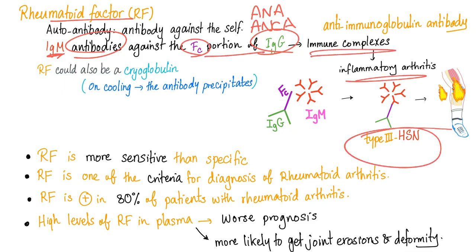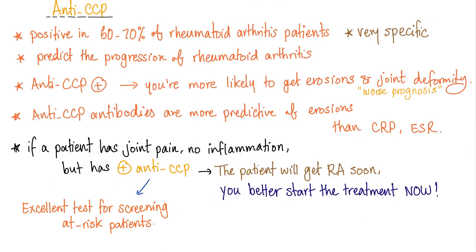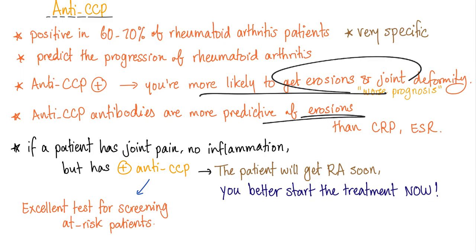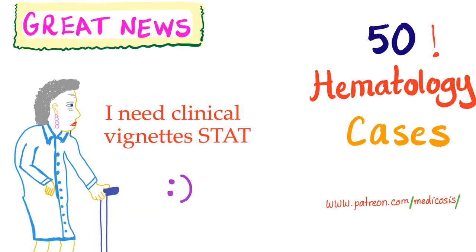These immune complexes deposit — this is type 3 hypersensitivity — and inflammation is on. Rheumatoid factor is more sensitive than specific. Anti-CCP antibodies do correlate with the severity of symptoms and are very specific for rheumatoid arthritis patients.